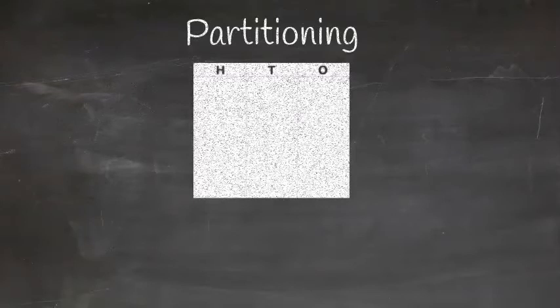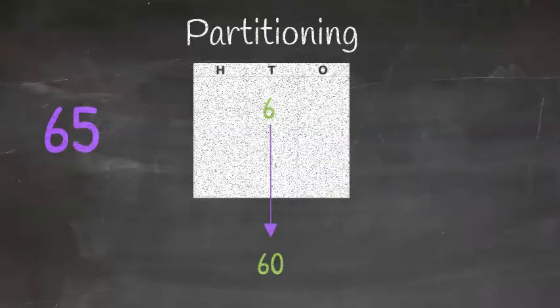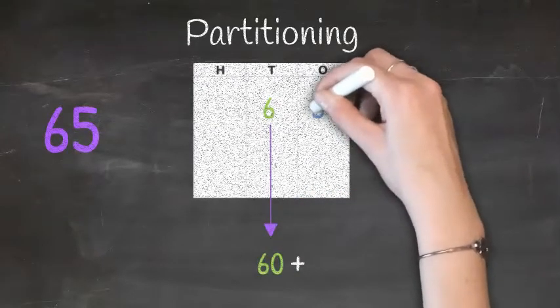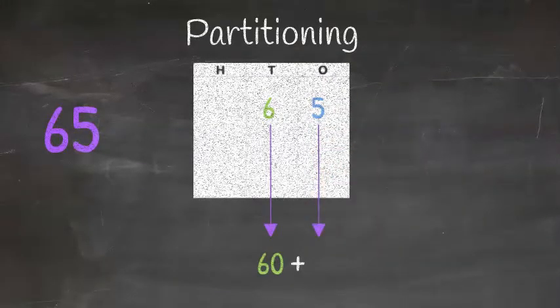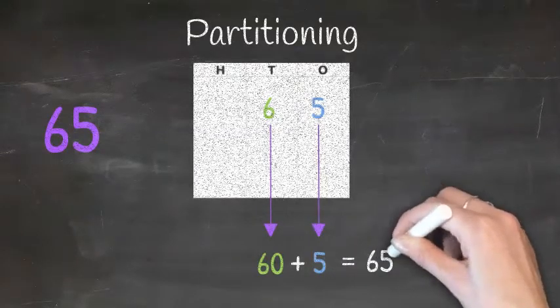So, using partitioning, let's start with an easy one, shall we? 65. Let's partition this number. The 6 is in the tens column. So, we know this represents 60. 60 plus the 5 that is in the ones column, which represents 5 ones, meaning we just bring that number down. We do not need to change this. So, 60 plus 5 equals 65.